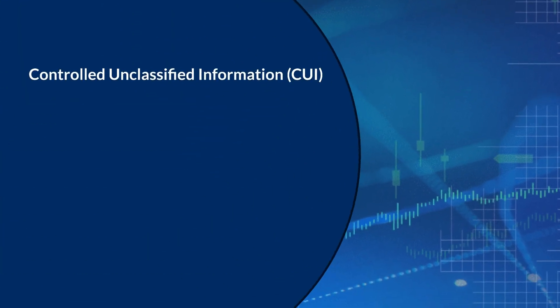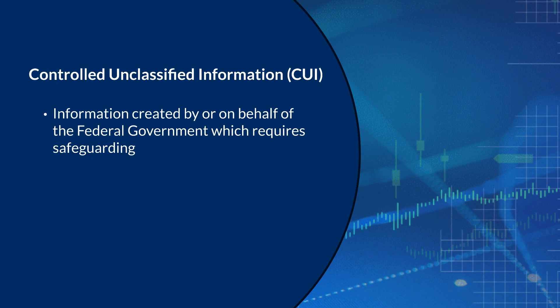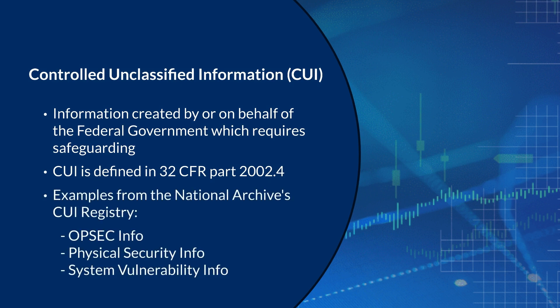Controlled unclassified information is created by or on behalf of the federal government and requires safeguarding. CUI is defined in 32 CFR Part 2002.4. Examples from the National Archives CUI Registry include OPSEC information, physical security information, and system vulnerability information.